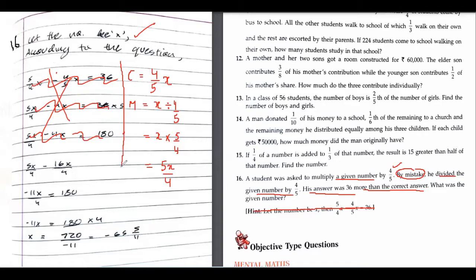I'm just erasing this part now, focusing on his answer. His answer was incorrect, isn't it? But it was 36 more than the correct answer.